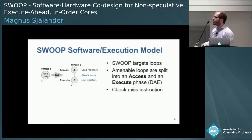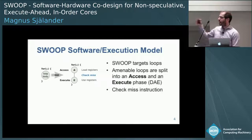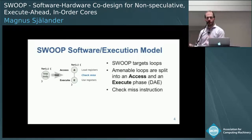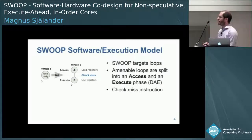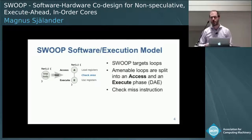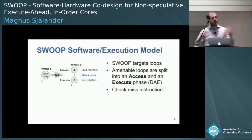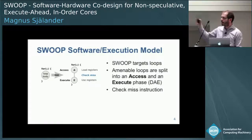What we introduce here is a new instruction, a check-miss instruction, which basically says that if any of the loads in the access phase actually miss — so we need to go to main memory — this information is transferred to the application so it can act on this and do something else. You can think of check-miss as a branch, with the branch condition being: if any of the loads in the access phase missed, then we branch out.